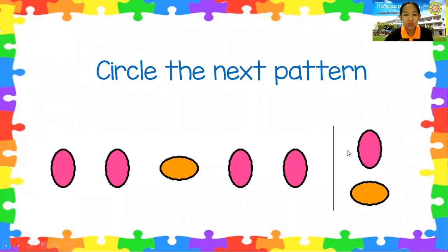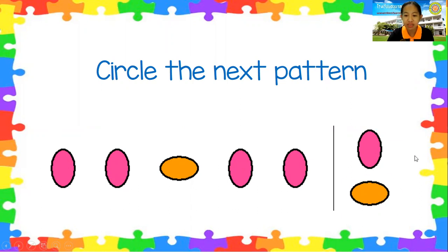Next one. Pink, pink, orange, pink, pink. What is the next pattern — is it pink or orange? Orange. Very good, that is correct.